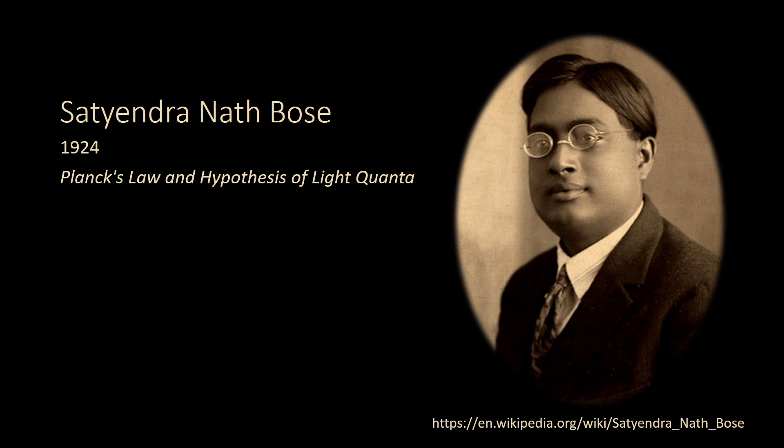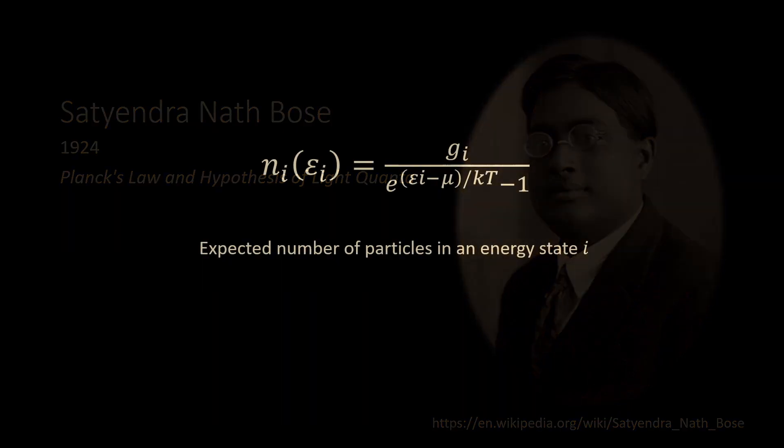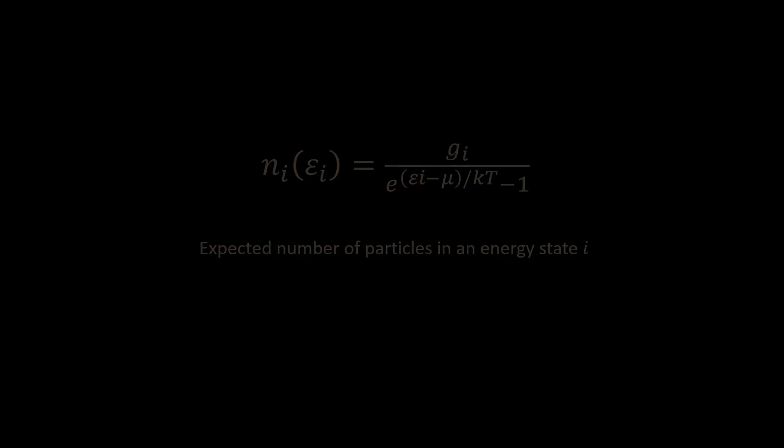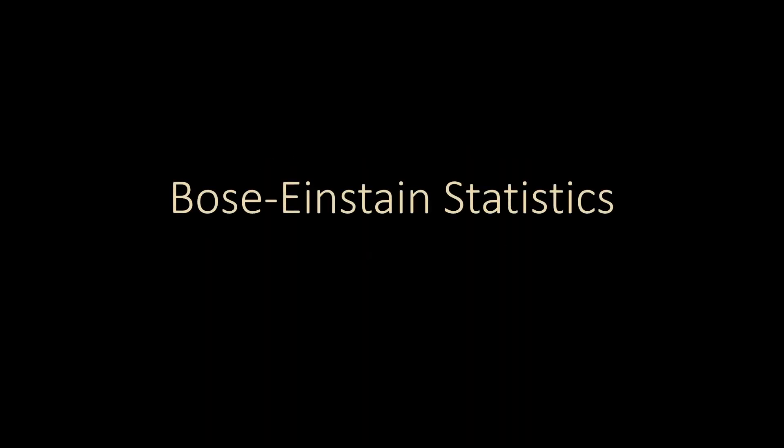In 1924 and 1925, Einstein published two additional papers on Bose's work, extending it to describe massive particles as well as photons. This combined work, known as Bose-Einstein statistics, is where we get the term boson, which is the class of particle defined as those whose behavior Bose-Einstein statistics describes, which we now know are particles of integer spin.